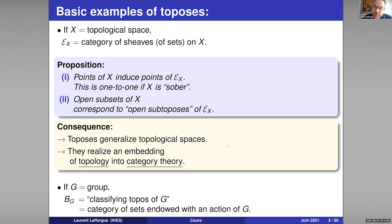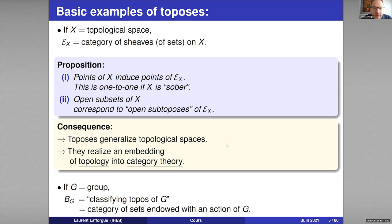The sheer fact of going from one world to such a different world is already extremely deep in itself. And not only is it deep, but by going from topology to category theory through the construction of the associated toposes, we enlarge the world of topology a great deal. This becomes immediately clear when we come to the second type of example of toposes, which is given by groups: for any group, we can consider the category of sets endowed with an action of the group, and this is also a topos.